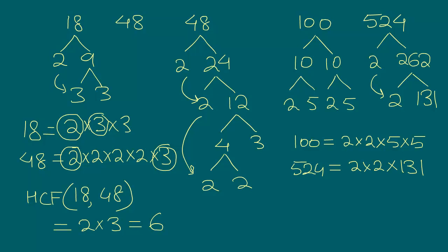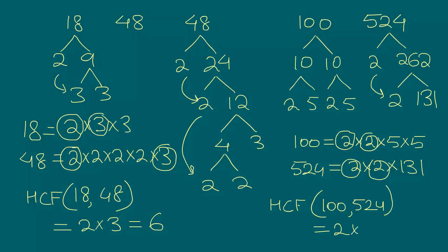So what are all the common factors? We see there is a 2 in 100 and a 2 in 524, and one more 2 and one more 2. For 100 we have 5 and 5 left, and for 524 we have 131 — so there are no more common factors. Therefore the HCF of 100 and 524 is 2 times 2, which equals 4. So far, everything we've done is a recap from our previous classes — nothing new.